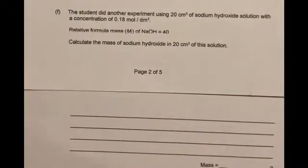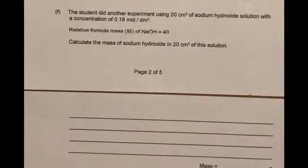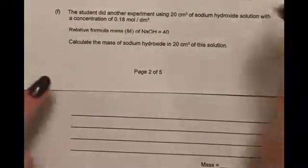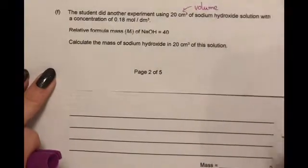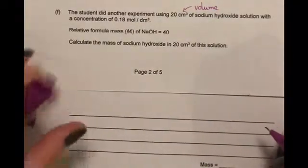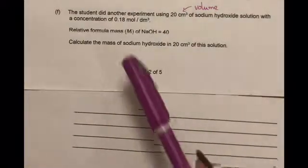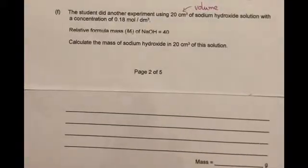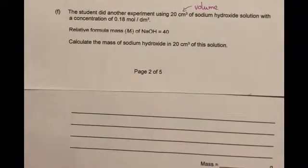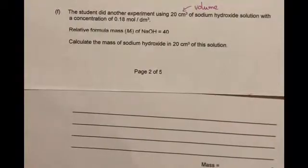Okay so the last part question F says the student did another experiment using 20 centimetres cubed of sodium hydroxide. So that's the volume with a concentration of 0.18 moles per decimetre cubed. Then they tell you that the relative formula mass of sodium hydroxide equals 40 and they ask you to calculate the mass of sodium hydroxide in 20 centimetres cubed of this solution.